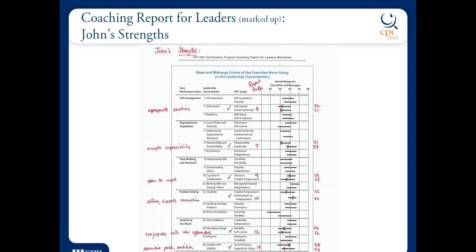Third area of strength: capacity for collaboration. Two scales — tolerance and creative temperament. He's on the black horizontal line. I ran through and looked at his key strengths and thought, what new things does the coaching report for leaders add to the narrative? I saw some interesting additions: that notion of being open to input, supporting innovation, being comfortable with new approaches and managing change, and that he's got some executive poise. I was very quick to jump on him for those lower sociability scores, but he does show some executive poise and a little bit of appropriate ambition — he wants to show what he can do.